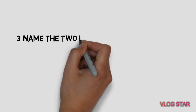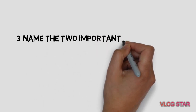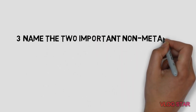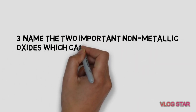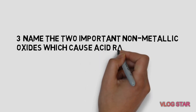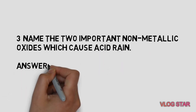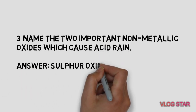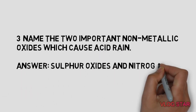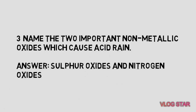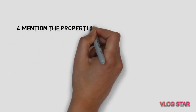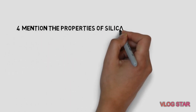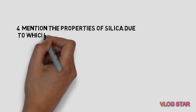Name the two important non-metallic oxides which cause acid rain. Sulfur oxides and nitrogen oxides.